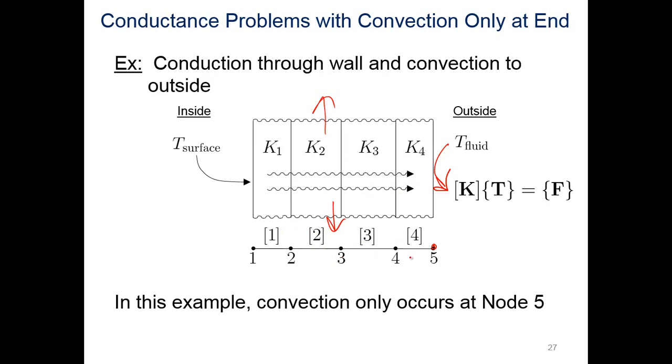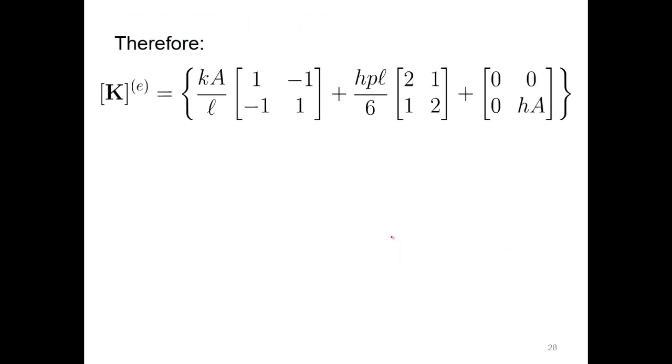Four elements, five nodes, and we'll develop our matrix. Here's the general form of the stiffness matrix for a thermal case. We have conduction, convection from the outer surfaces—in the thin case, the horizontal surfaces—and convection at the tip.